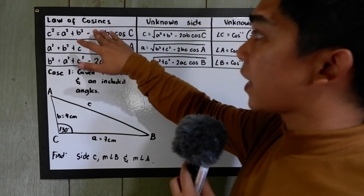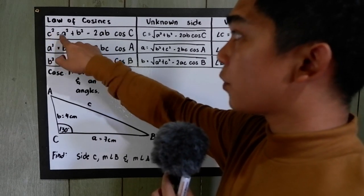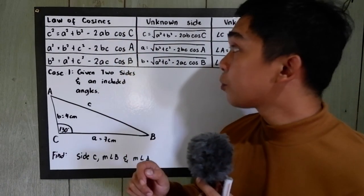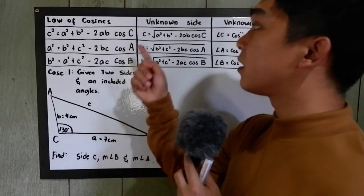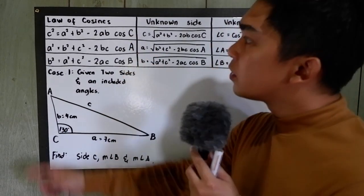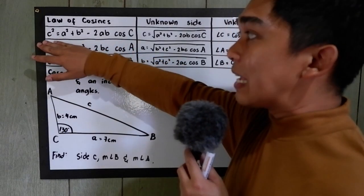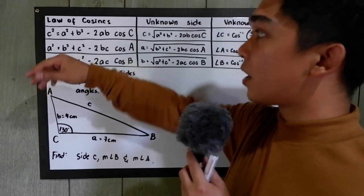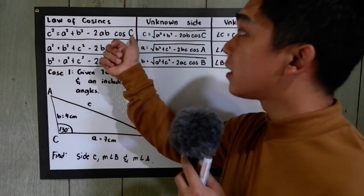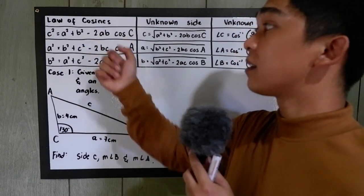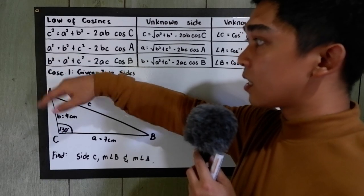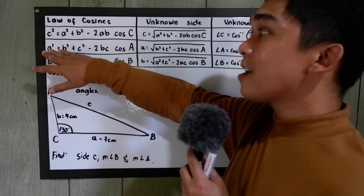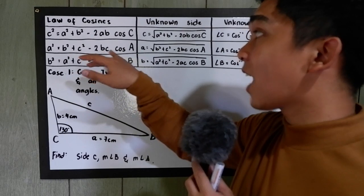We have the law of cosines. We have c squared is equal to a squared plus b squared minus 2ab cosine C. Small letters indicate our sides and big letters indicate our angles. So notice in our law of cosines, if the unknown is side c, therefore our given are side a, side b, and angle C.